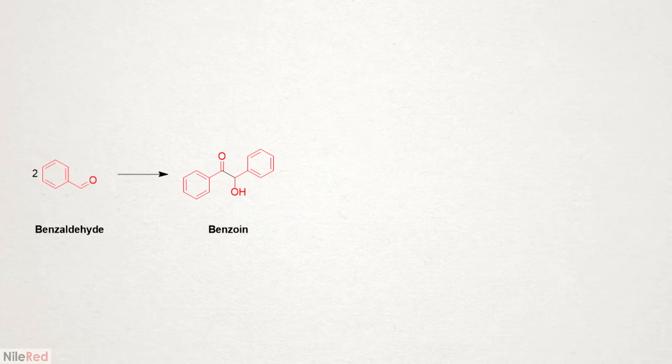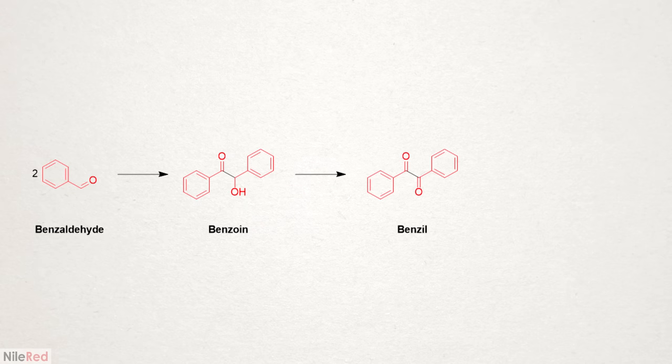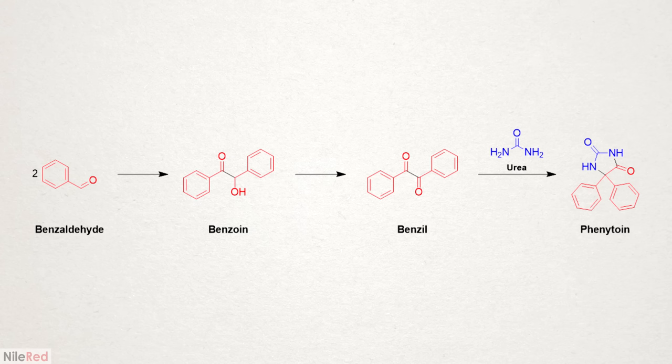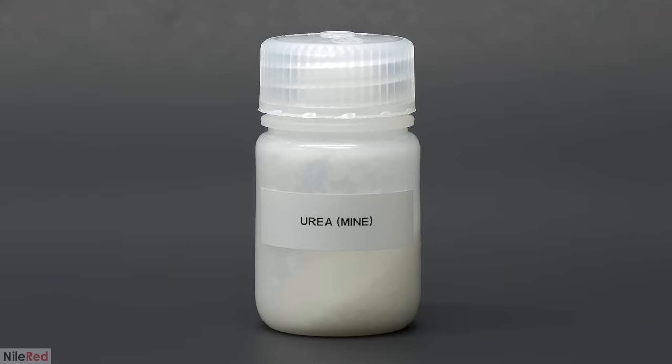I'll start by reacting it with itself to make something called benzoin, which will then be oxidized to benzyl using nitric acid. For the last step, I'll react it with urea, which I extracted from my own urine in a previous video. If you're interested in checking out that honestly pretty gross project, there's a link in the description.